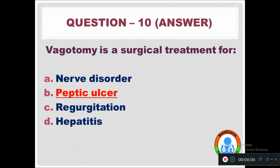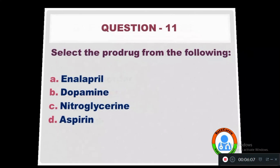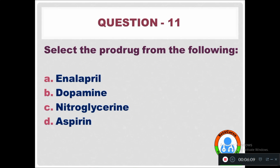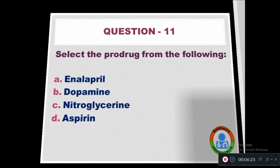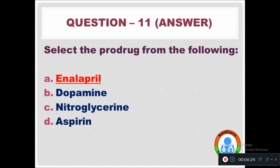Question 11: Select the pro-drug from the following — Option A: Enalapril. Option B: Dopamine. Option C: Nitroglycerin. Option D: Aspirin. The right answer is Enalapril, which is a pro-drug.